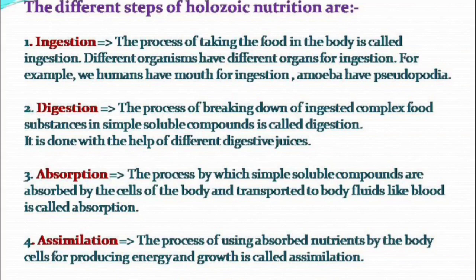The third step is absorption — the process by which simple soluble compounds are absorbed by the cells of the body and transported to body fluid like blood is called absorption. The fourth step is assimilation — the process of using the absorbed nutrients by the body cells for producing energy and growth. The fifth and last step is ejection — the process by which undigested solid waste is removed from the body. This covers all five steps of holozoic nutrition.